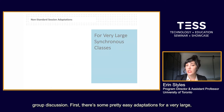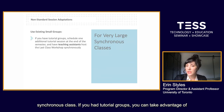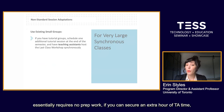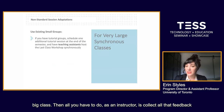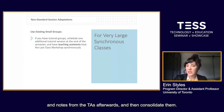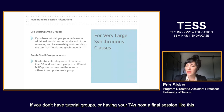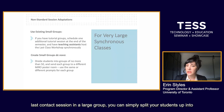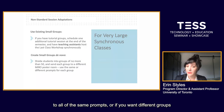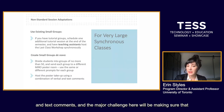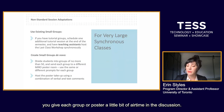There are some easy adaptations for a very large synchronous class. If you have tutorial groups, you can take advantage of the small groups your students are already used to working in and ask your teaching assistant to host these sessions. Since the session essentially requires no prep work, if you can secure an extra hour of TA time, this is the easiest option for running the Last Class Workshop with a really big class — then all you have to do as an instructor is collect all that feedback and notes from the TAs afterwards and consolidate them. If you don't have tutorial groups, you can simply split your students up into groups of no more than 50 and send each group to their own Miro poster room. You can decide if you want all groups to respond to the same prompts or if you want different groups to tackle different aspects of the course.